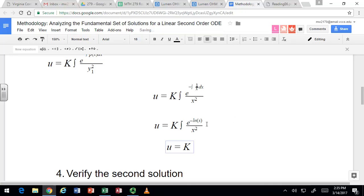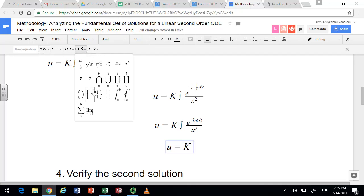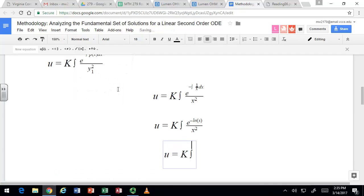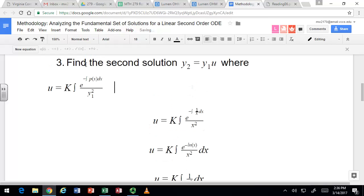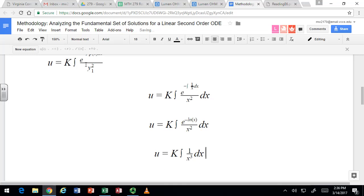All right. e^(-ln(x)) is actually just 1/x, because we can bring the negative up as an exponent and then e to the natural log cancel. And x^(-1) is 1/x. So this is really integral of 1/x³. I guess we should have dx here.